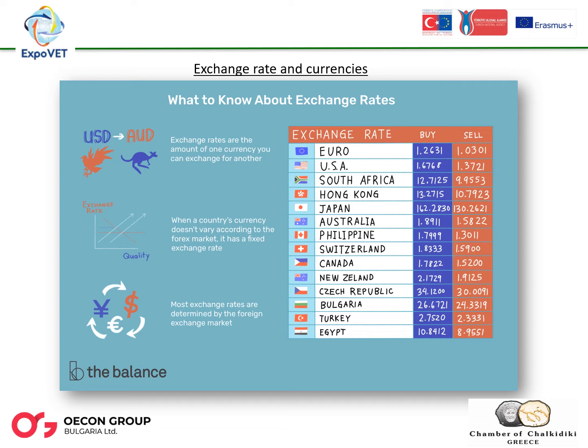Exchange rates will never be exactly the same in all operators since it is a private market in which entities change their purchase or sale prices according to their currency stocks, expectations, and requests from their clients. Exchange rates between two currencies can be fluctuating, fixed, or quasi-fixed, depending on the interaction of market forces and the intervention of public authorities, mainly central banks. In the case of fluctuating exchange rates, the fluctuation can be clean — without intervention of public authorities — or dirty, with intervention of public authorities in the sense that they consider appropriate.